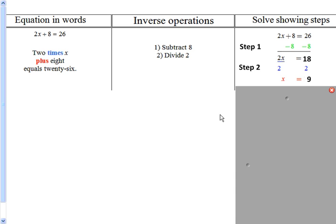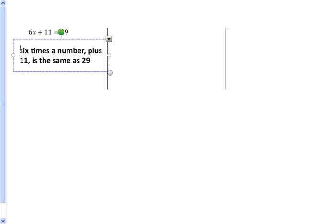Let's look at example 2. The equation is 6x plus 11 equals 29. When we look at this equation, you can see that we are multiplying 6 times the number. That unknown number is x. Then we're adding 11. And that is the same as 29.